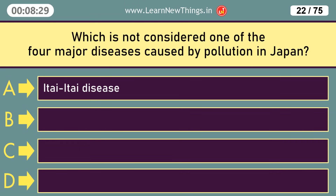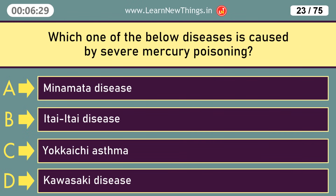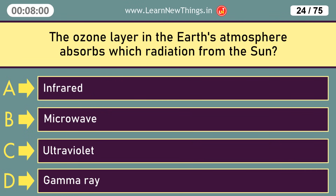Which is not considered one of the four major diseases caused by pollution in Japan? Kawasaki disease. Which one of the below diseases is caused by severe mercury poisoning? Minamata disease. The ozone layer in the earth's atmosphere absorbs which radiation from the sun? Ultraviolet.